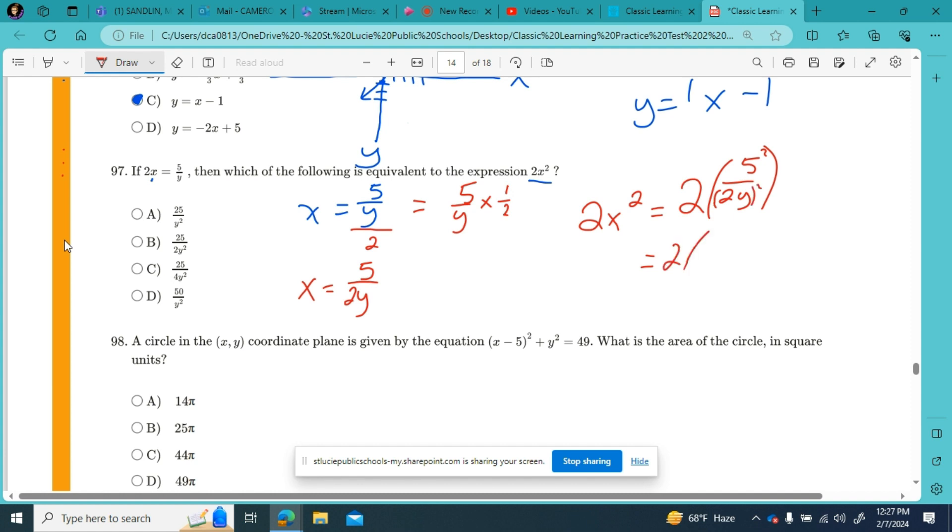So that's 2 times my numerator squared, 5 squared. It's 5 times 5, 25. Over my denominator squared, 2 squared is 4, and y squared, y squared. Now I can multiply this by 2. I'm going to take my 2 and just make it a fraction, 2 over 1 times 25 over 4y squared. Now I can look at my answer choices and say, not it, not it.